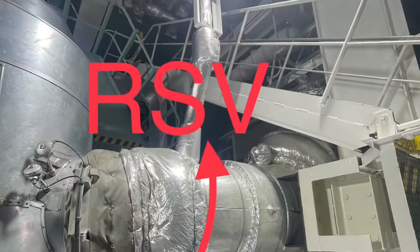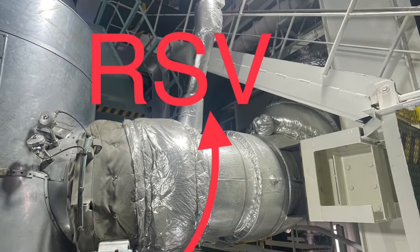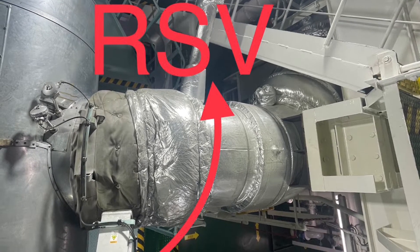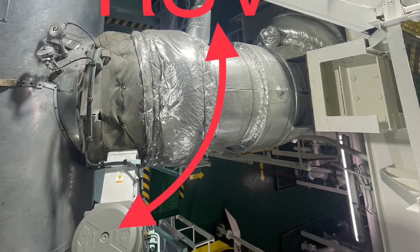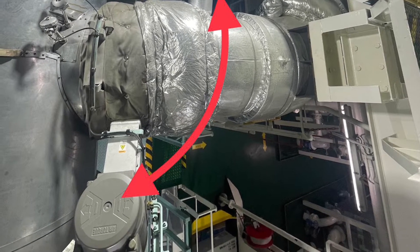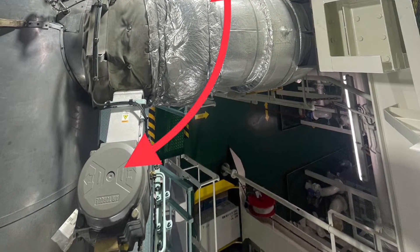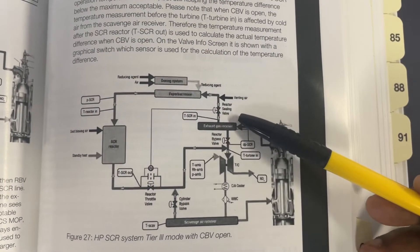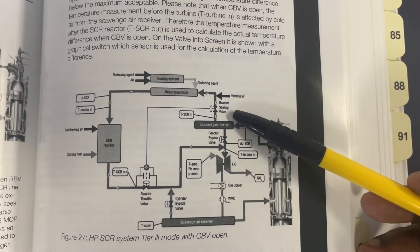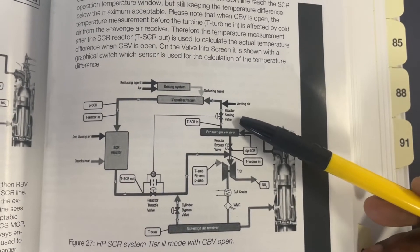When the SCR system is not in operation, the RSV opens if the pressure in the SCR line is too high compared to pressure in front of the turbocharger. The RSV can be opened or closed; it cannot be regulated.